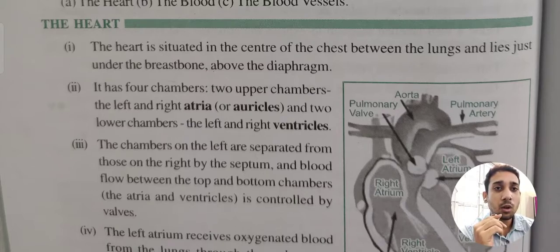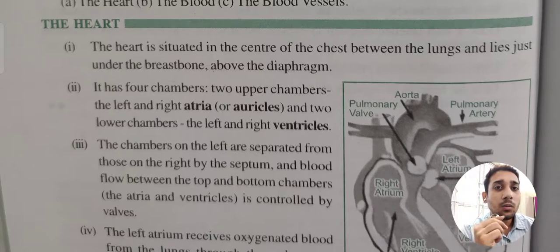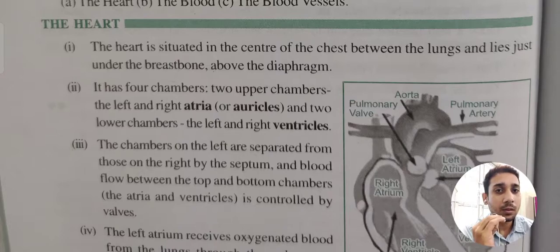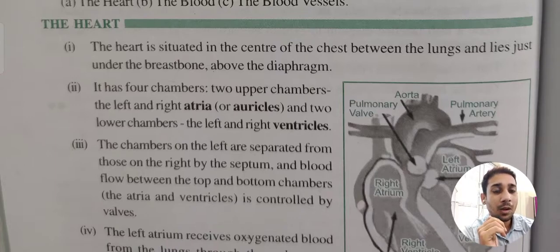Our heart has four chambers. The two upper chambers are the left and right atria (also called auricles), and the two lower chambers are called the left and right ventricles. The chambers on the left are separated from those on the right by the septum, which is the wall dividing the heart into two parts. Blood flow between the top and bottom chambers is controlled by valves.